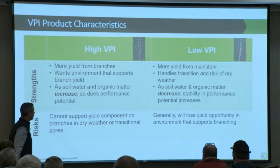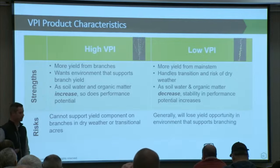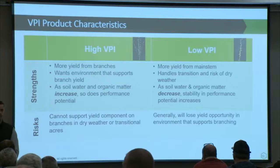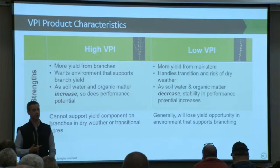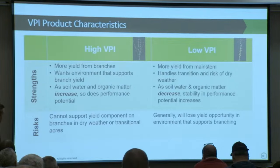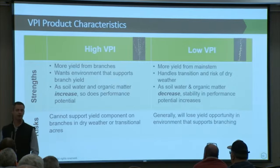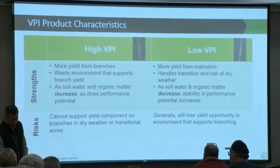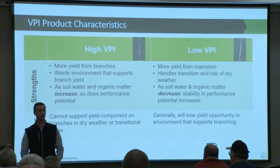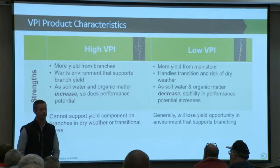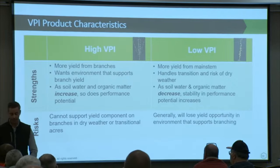Branching gets initiated much earlier than most ever thought — you'll see it initiating at V2, V3. If you're really dry early, you start to limit the potential for that branch yield right out of the gate. On the right side — low VPIs — way more yield consistently coming from the main stem. They'll handle transition and risk of dry weather. As soil, water, and organic matter decrease, they get more stability. They will handle stressful conditions better, whether from Mother Nature or within a field. The risk is they might lose out on the very top-end yield potential in a perfect environment.